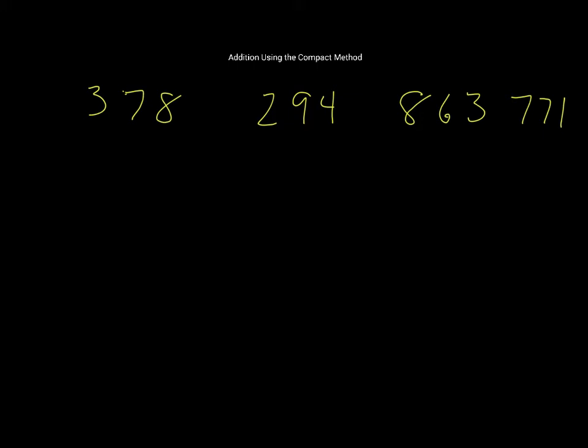So let's first of all take 378 and 863. The first thing you need to do with the compact method is decide which order you're going to put the numbers in.